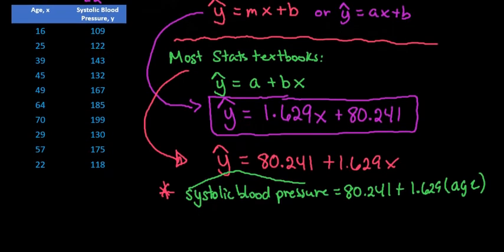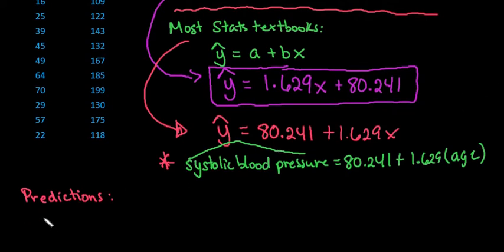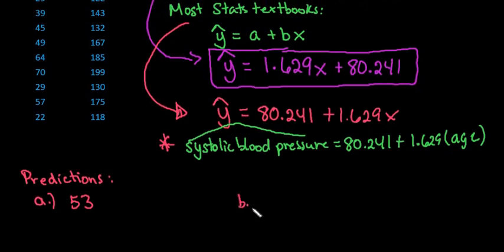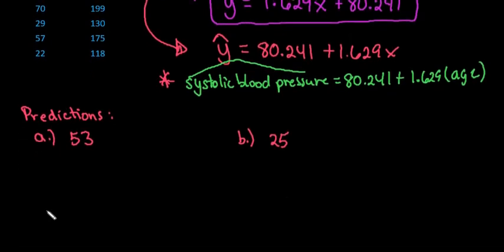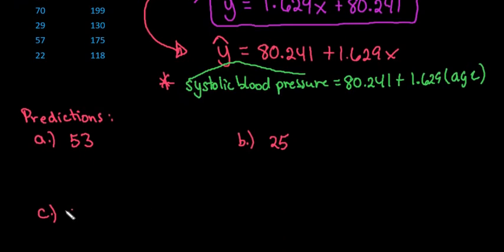So if you want to make predictions, let's say that we wanted to make a prediction for age, somebody that's 53. And maybe we want to make a prediction for somebody that is say 25. And maybe we want to make a prediction for somebody who is 85.